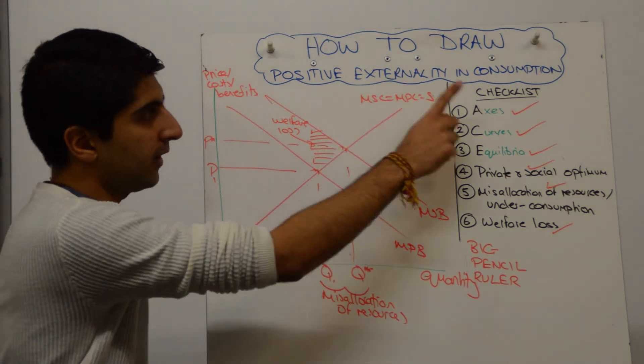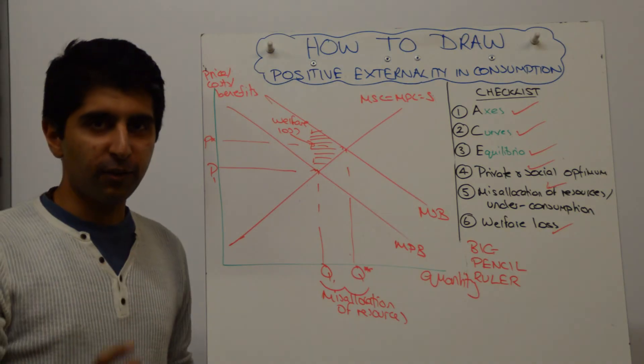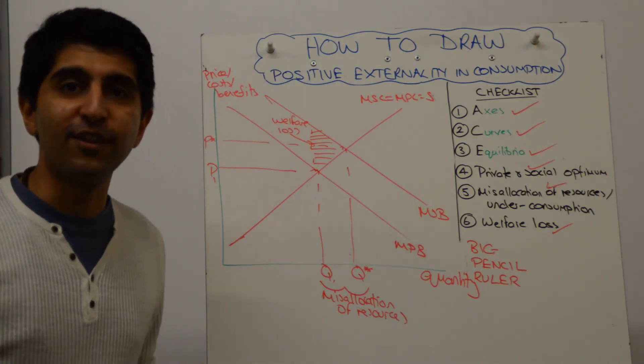That's that diagram done. And merit good, positive externality, consumption diagram right here. Practice, practice, practice. And I'll see you for the next video. Thank you.